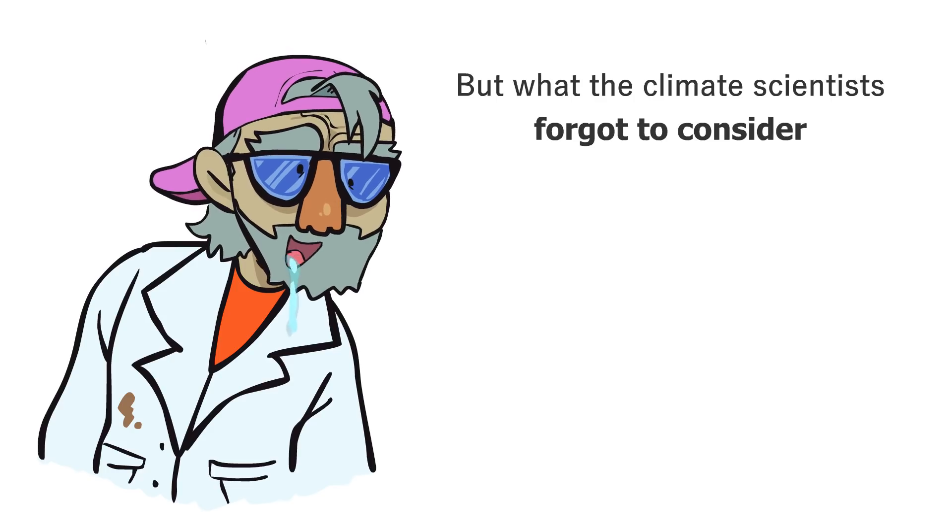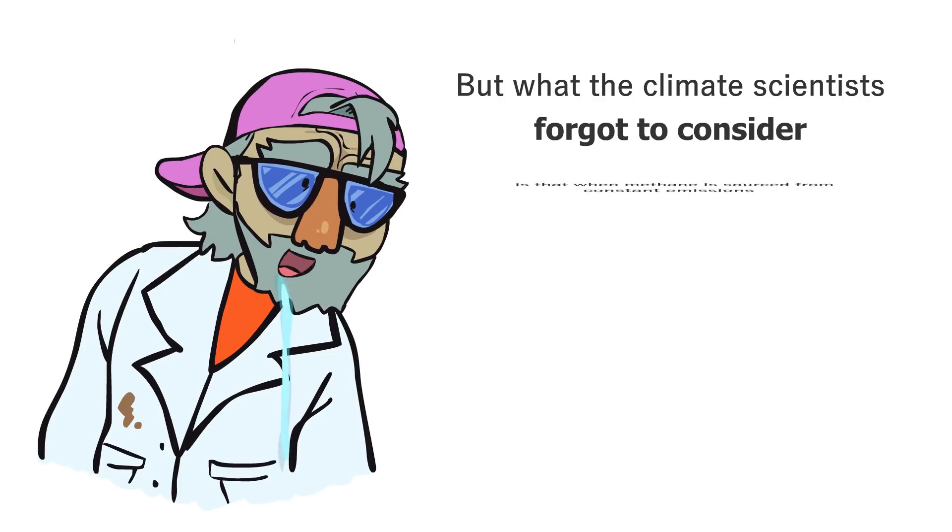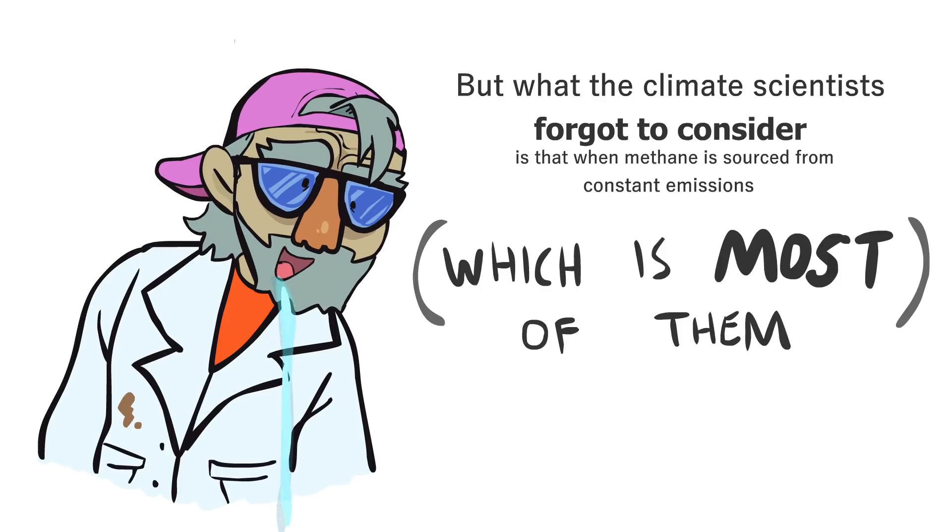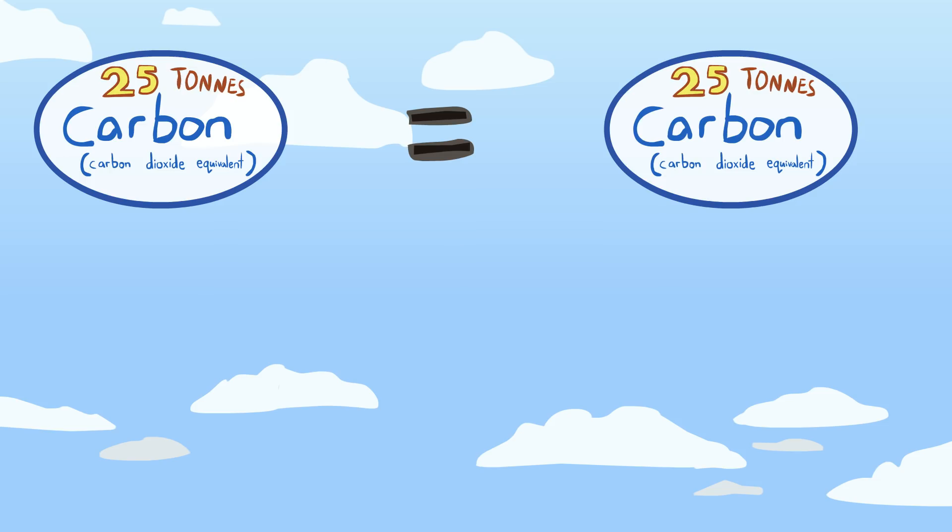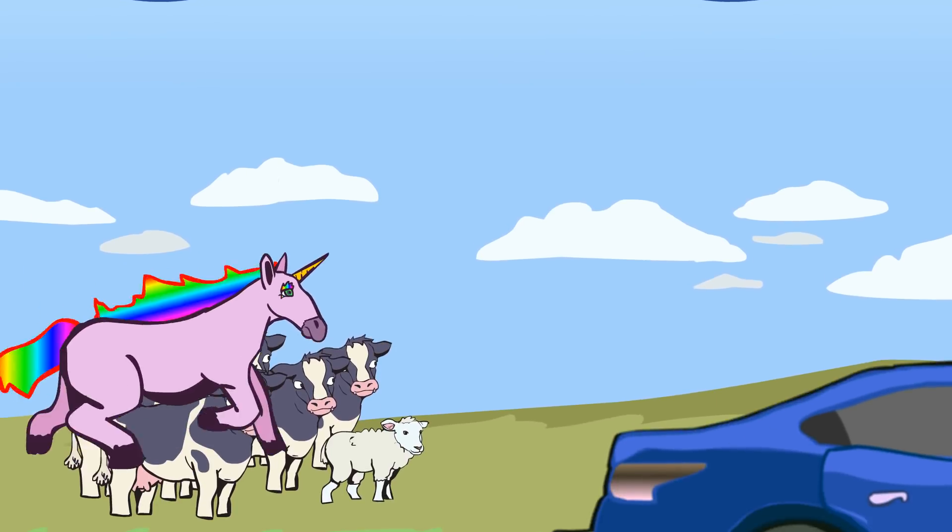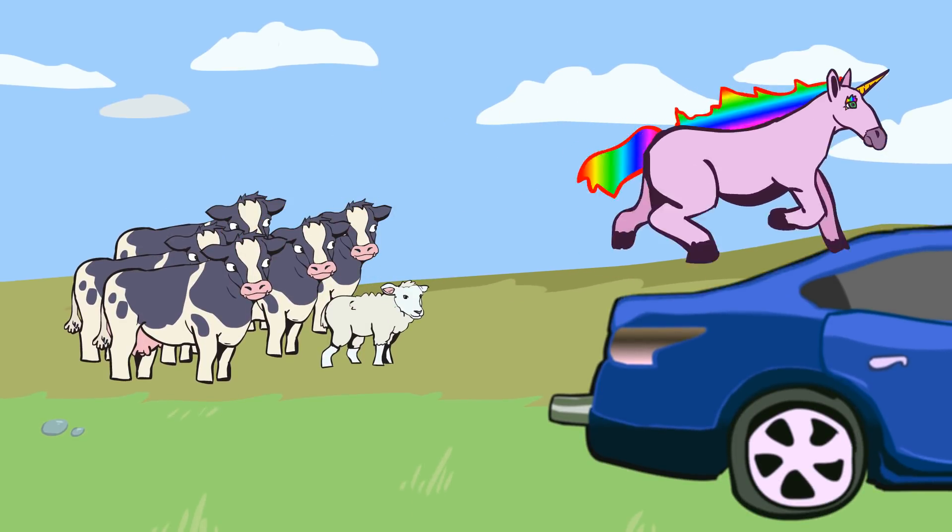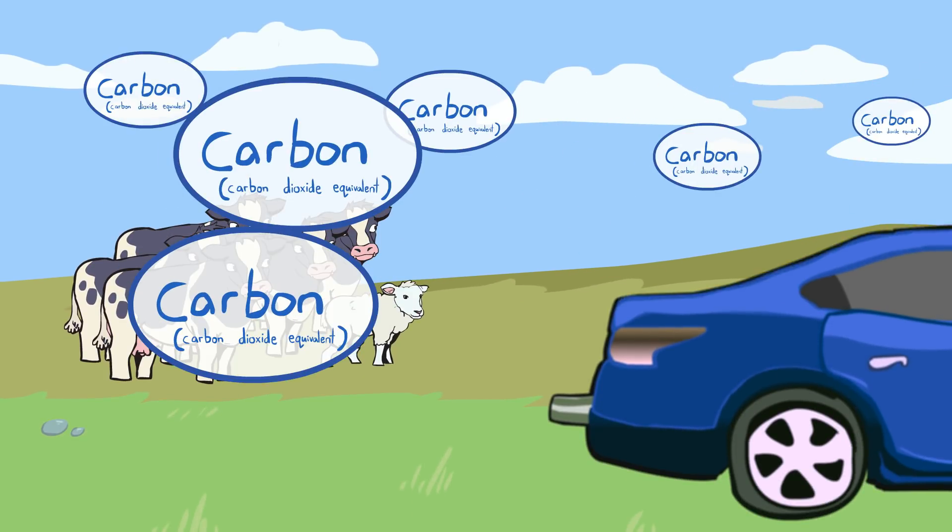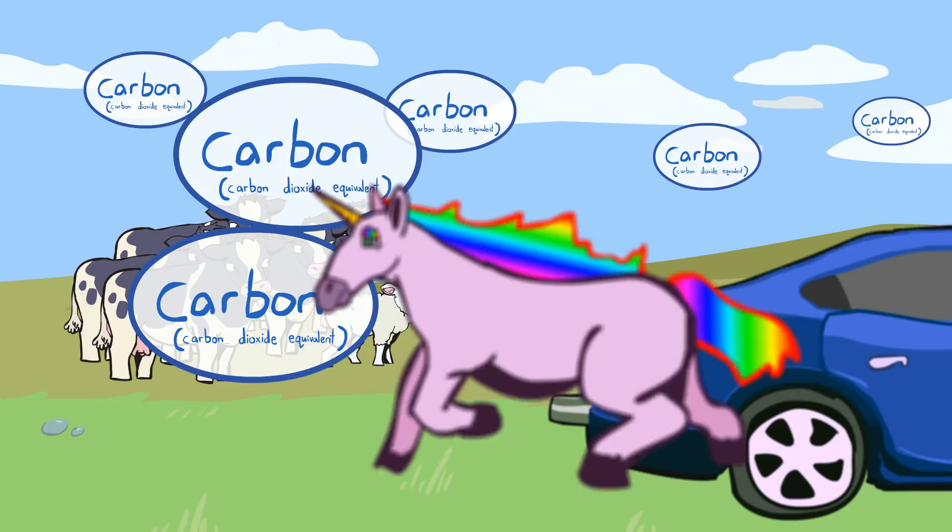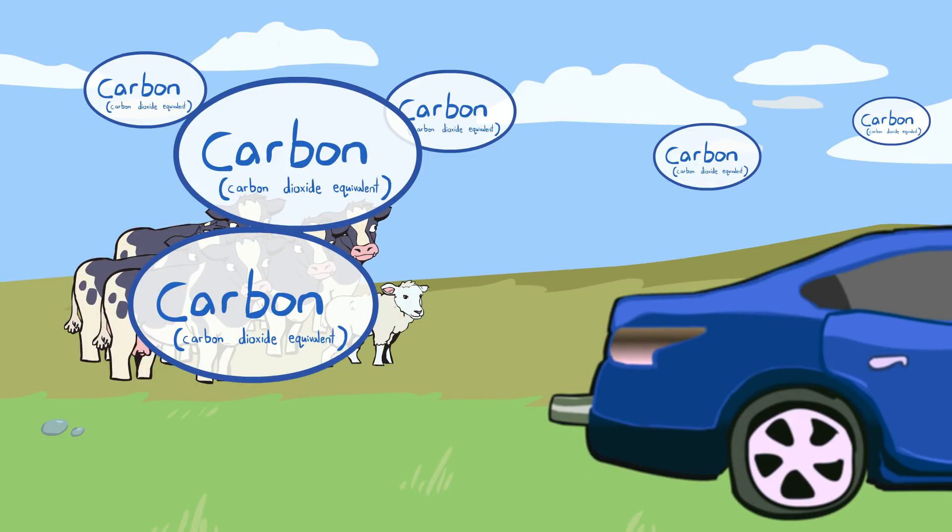But what the climate scientists forgot to consider is that when methane is sourced from constant emissions, which is most of them, the system did not work, and they had developed a system which bore no resemblance to reality and was creating huge quantities of fictional carbon that did not correspond to any increase in the concentration of any greenhouse gas.